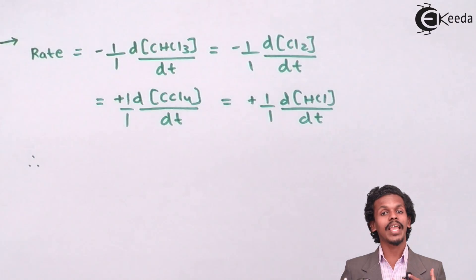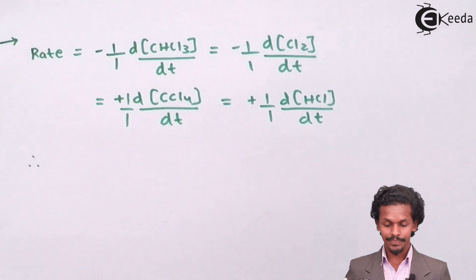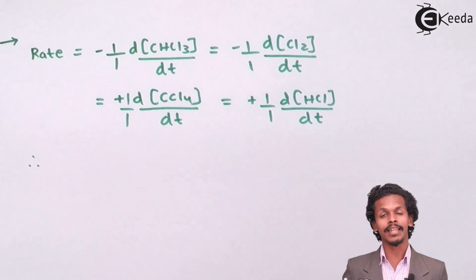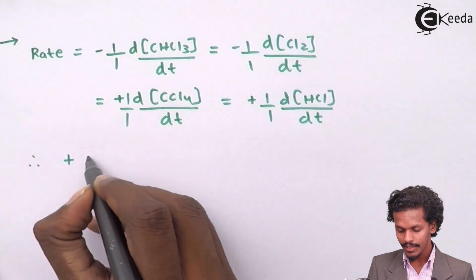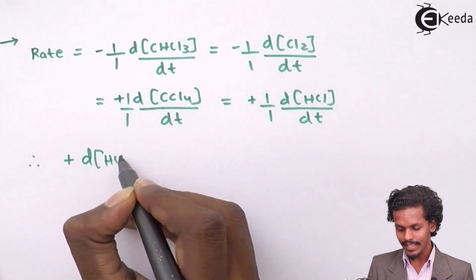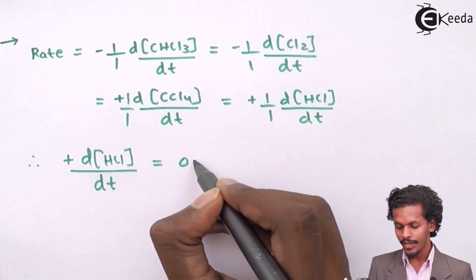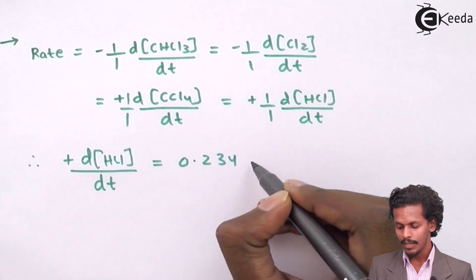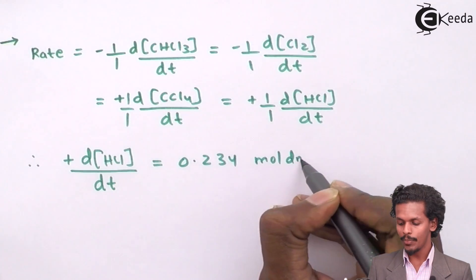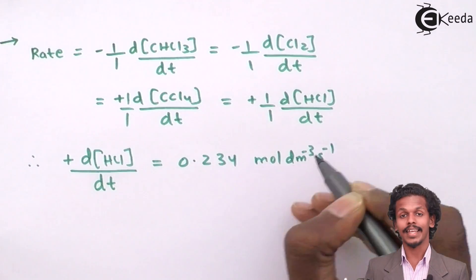So this is how we have wrote the representation for the rate of reaction. And in this thing, we have another data that is the rate of formation of HCl. Since the rate of formation of HCl means